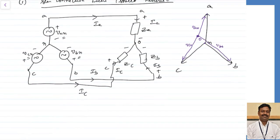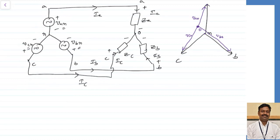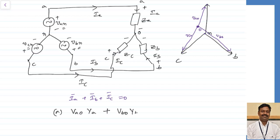If we go to the circuit or the load, the currents Ia, Ib and Ic are all entering. Taking KCL at node O, the current entering should equal the current leaving — that means Ia + Ib + Ic should be equal to 0. I can write Ia as the voltage across the impedance multiplied by the admittance. So this becomes: VaO × YA + VbO × YB + VcO × Yc = 0, which I am taking as equation number 1.